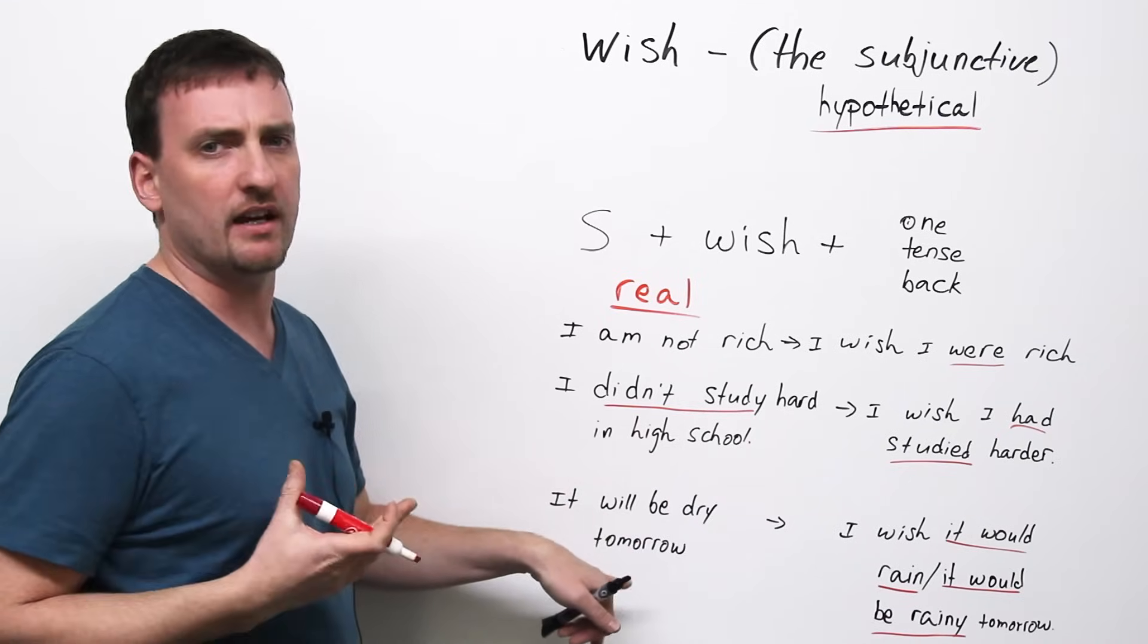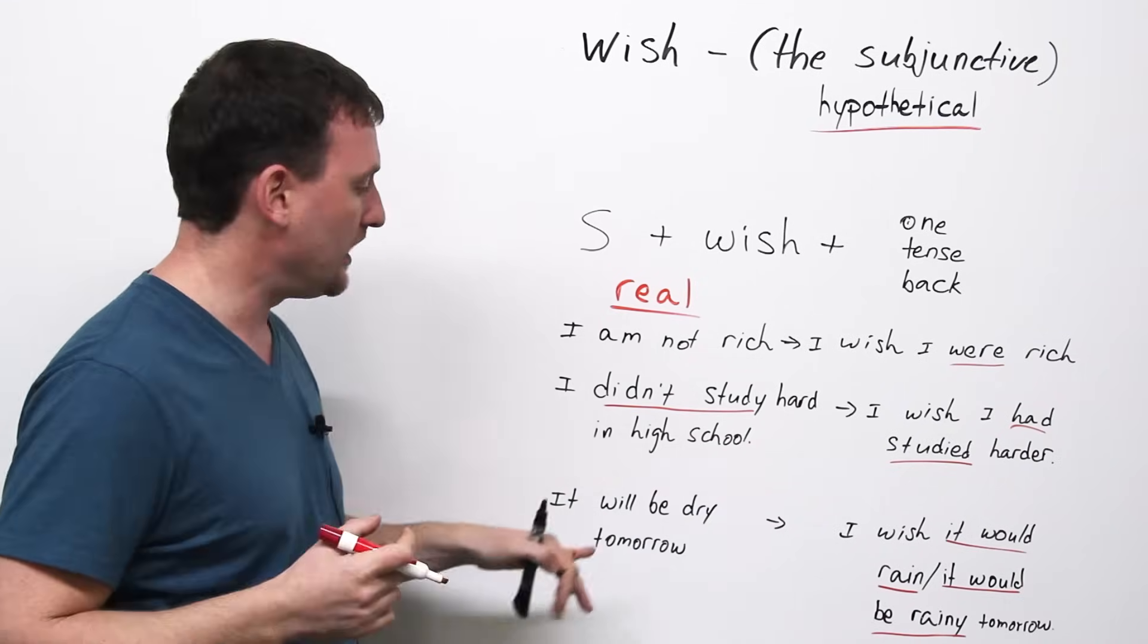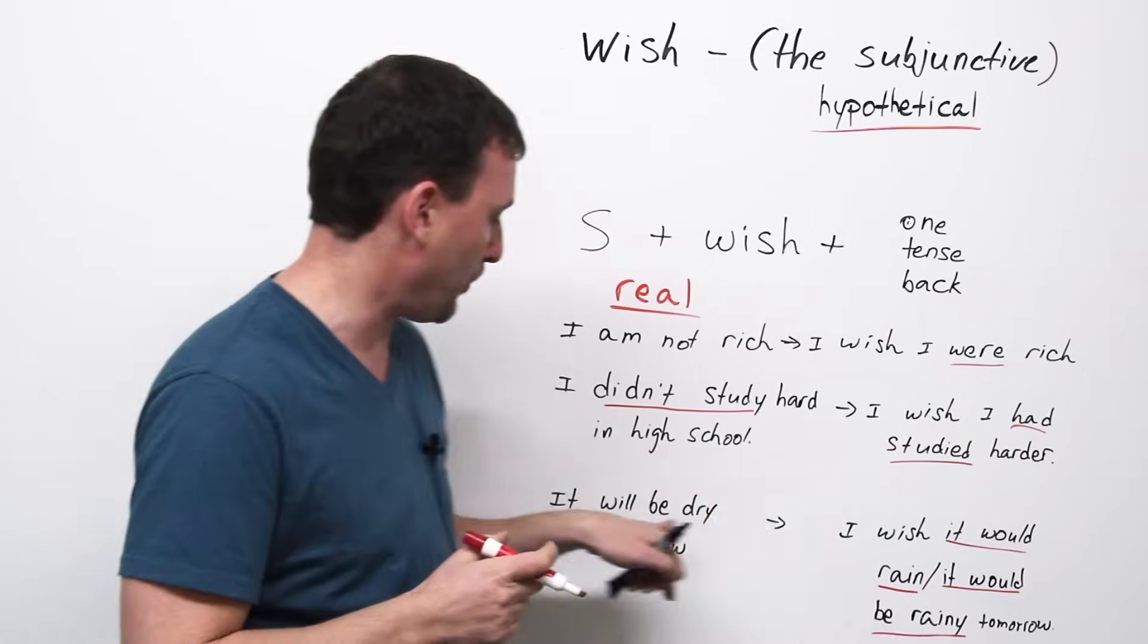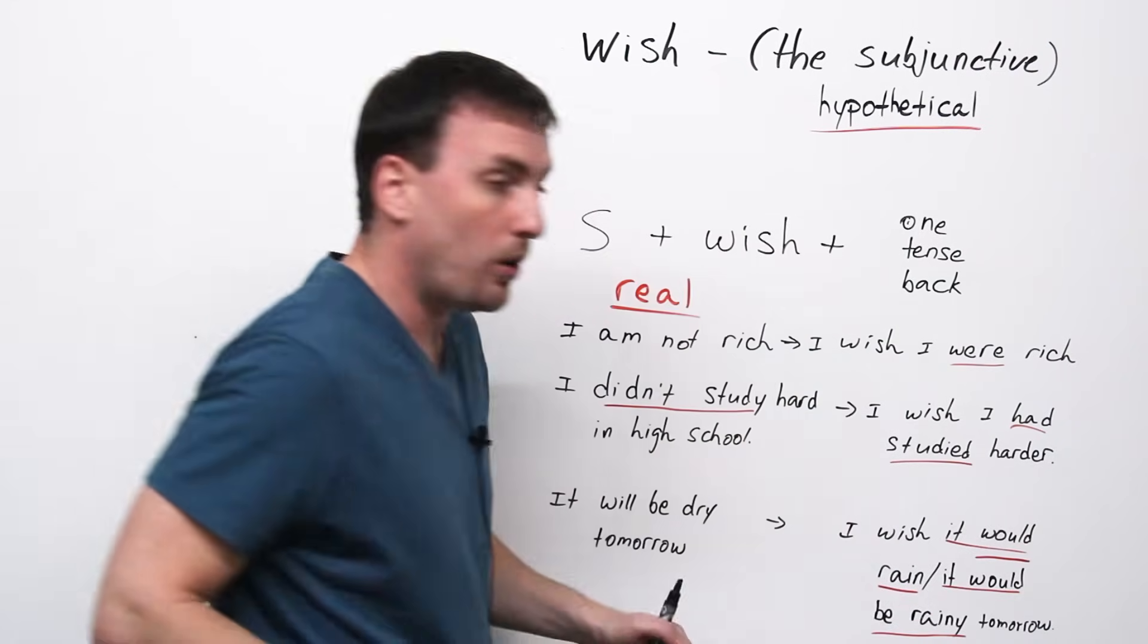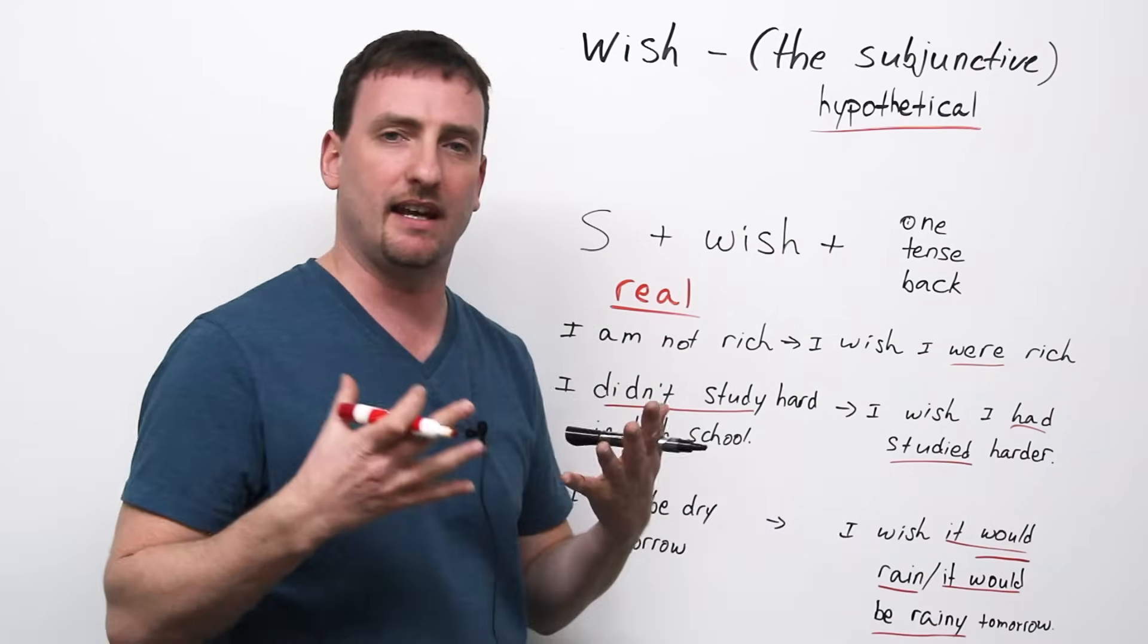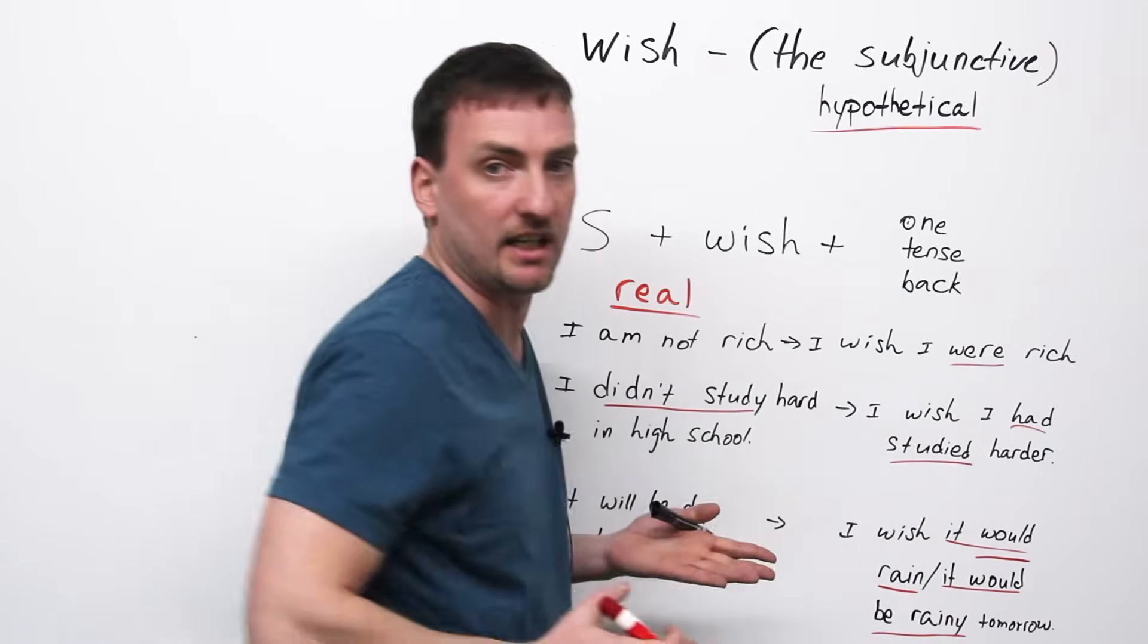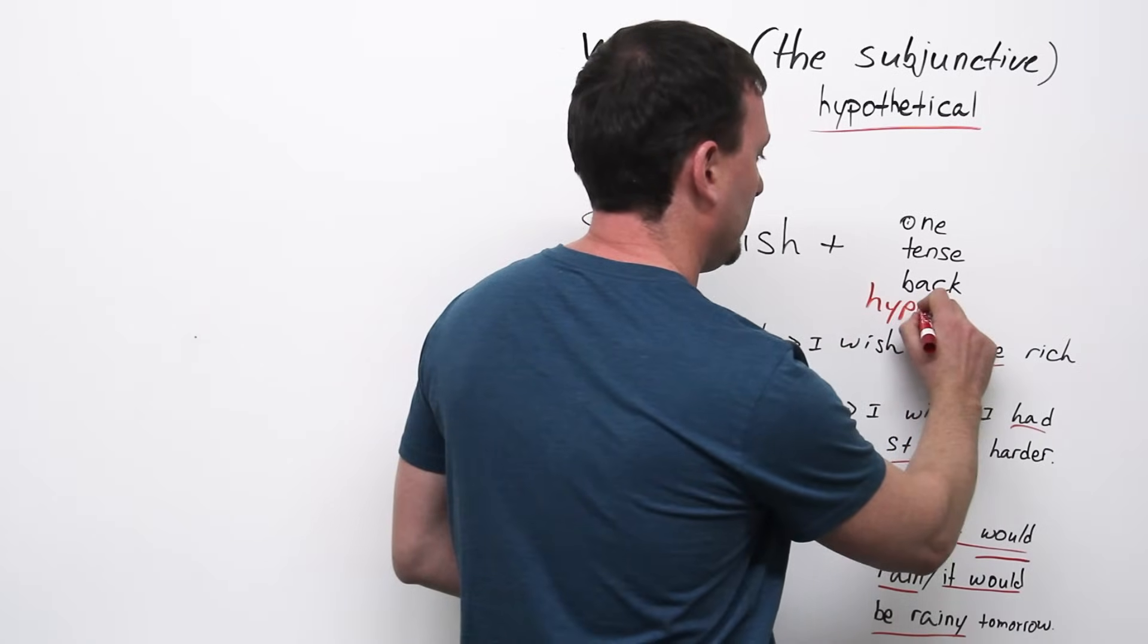It will be dry tomorrow. Like, the air will be very dry, sunny, hot, etc. Two ways I can speak about it. I can wish it would rain. I can use the action verb, but the will becomes would. Or, I wish it would be rainy tomorrow. If I want to maintain the be verb, I still use the would. I just add the be go to the adjective rainy and talk about the hypothetical situation.